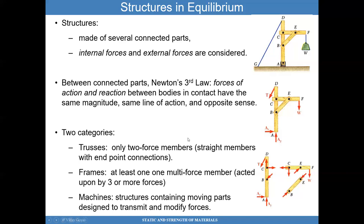There are several categories of structures. One is trusses, which are only two-force members — basically straight members with endpoint connections. Here, BE is a two-force member; it can only take tension or compression. Frames have three or more forces acting on a particular part. And we have machines, which are structures that contain moving parts designed to transmit and modify forces.